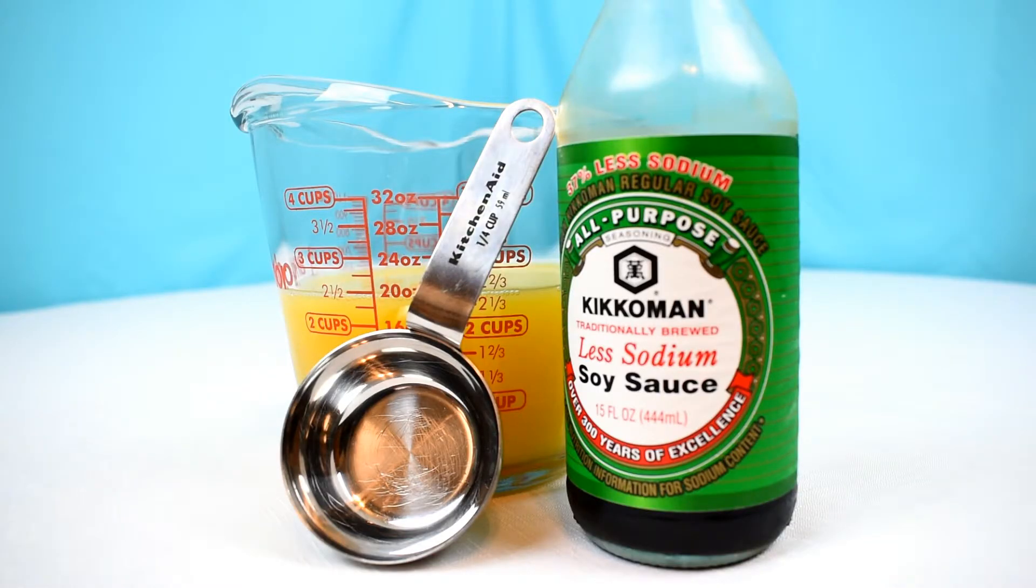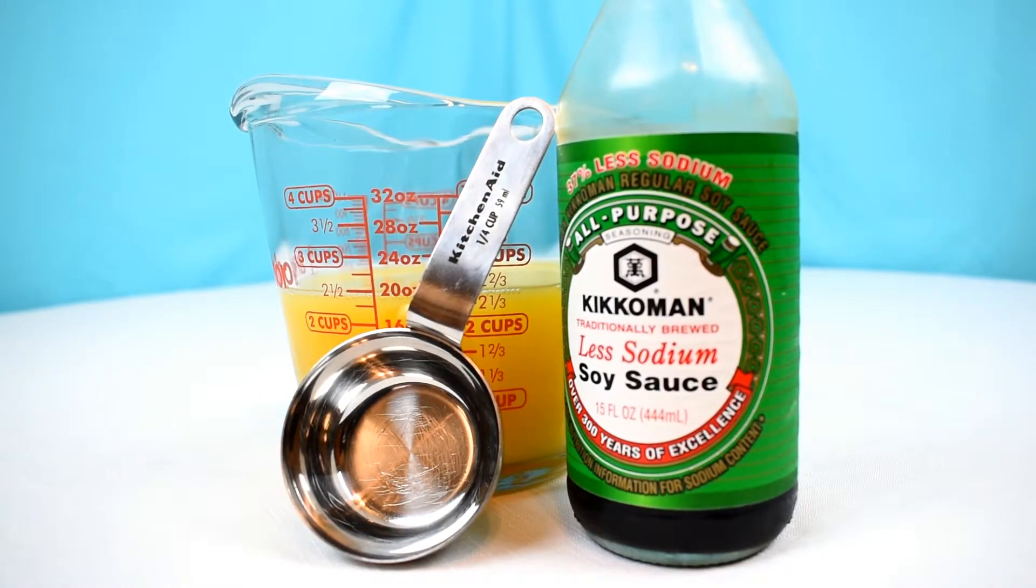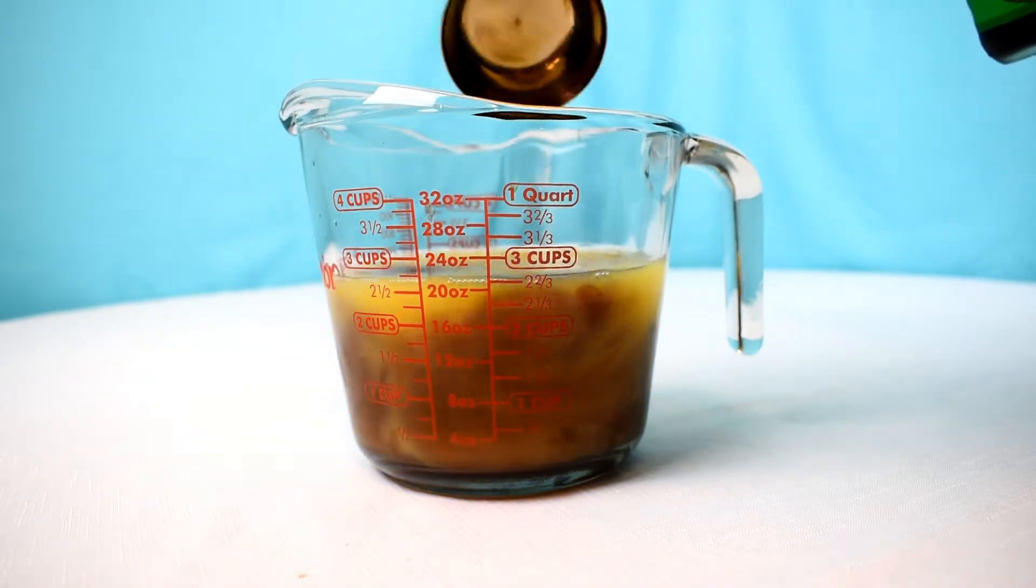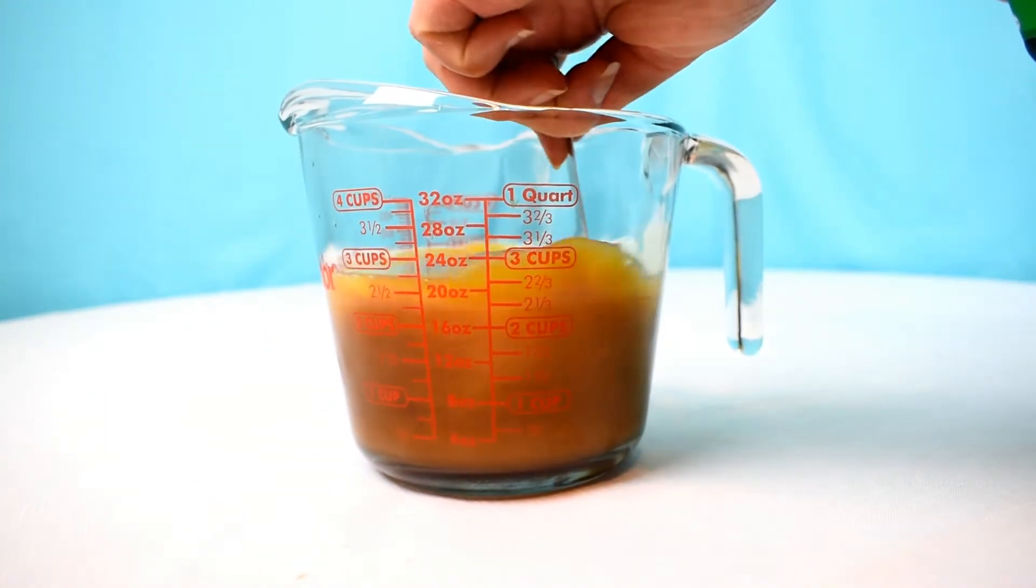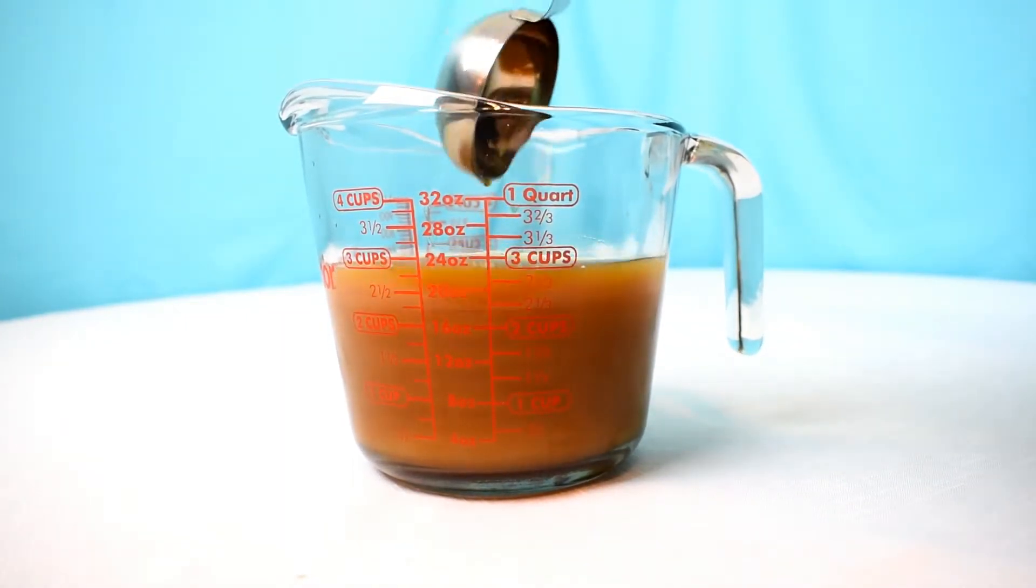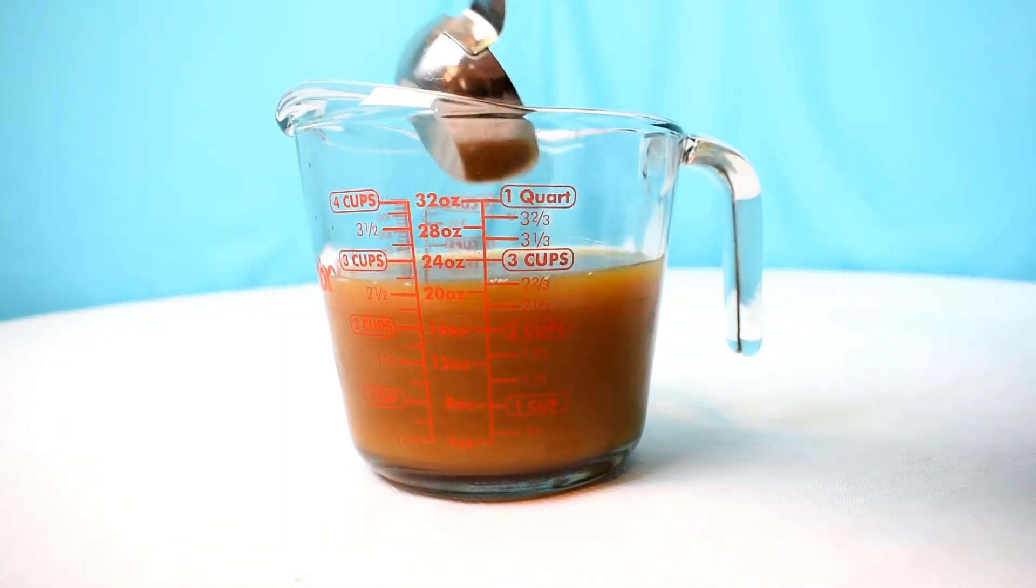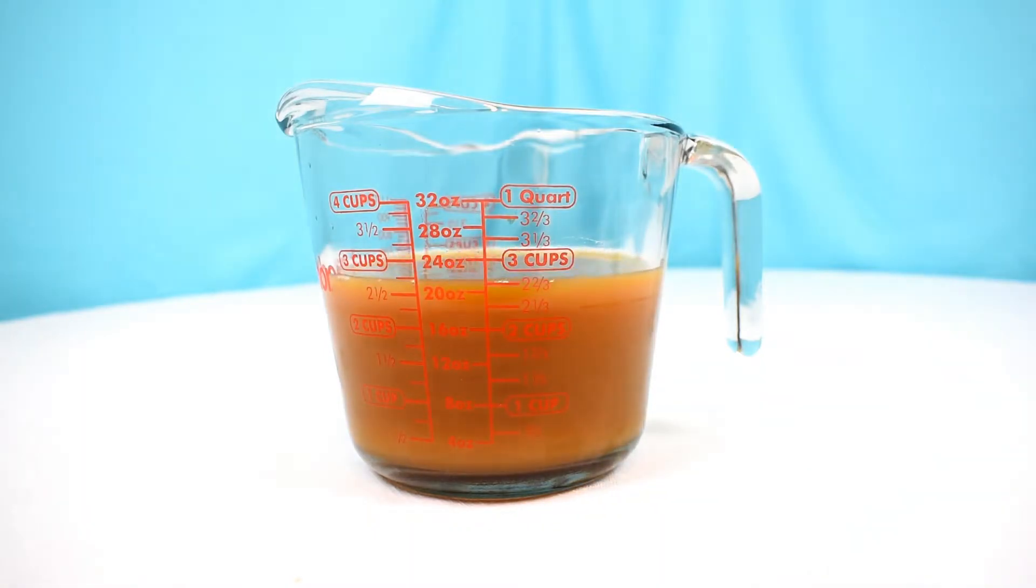So the next ingredient is a fourth of a cup of soy sauce. I know you're probably thinking that's still a lot of sodium. There's no way that your tofu will soak in all of that soy sauce. So because it's diluted, you are going to want that amount in there.